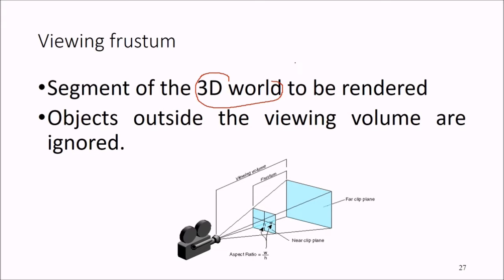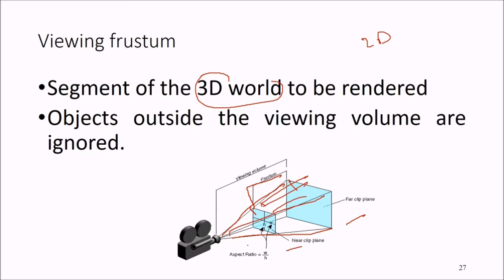The viewing frustum is the segment of the 3D world to be rendered — converted into a 2D image. Because the world scene can be quite large, objects outside the viewing frustum or viewing volume are ignored. We have a near clip plane, a far clip plane, and this frustum shape with an aspect ratio of w by h — this is the viewing volume.